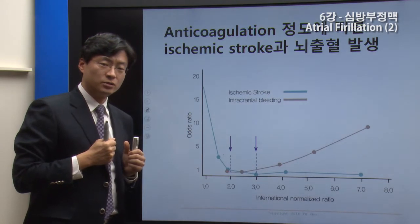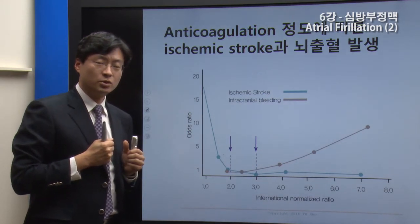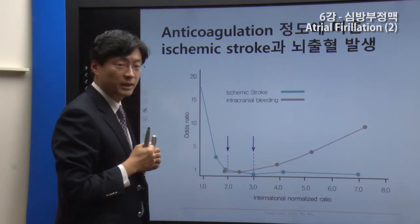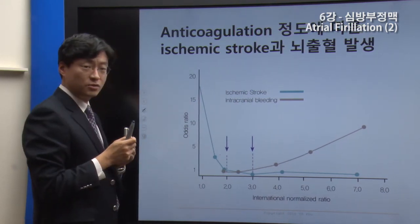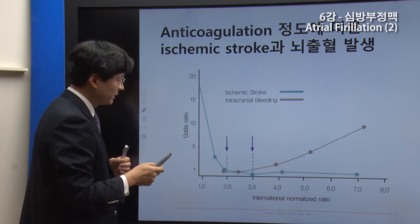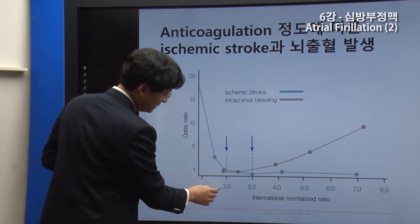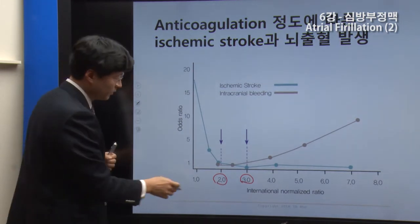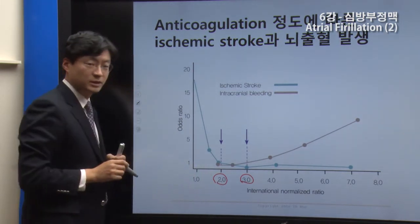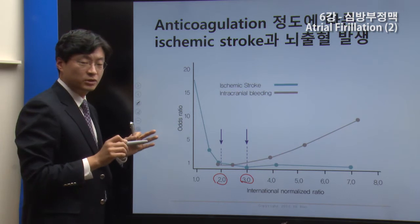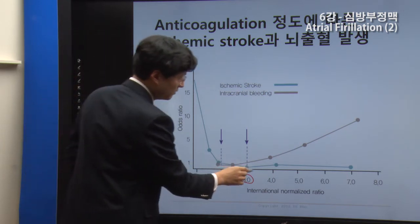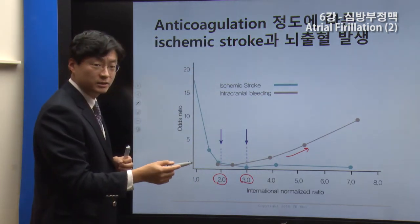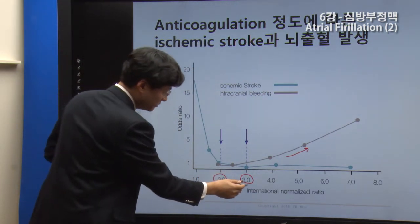Even though the effect is a lot, Warfarin is usually considered by the number of Prothrombin times, but that is not enough for stroke prevention. If you look at stroke prevention, you can see the number of Prothrombin times is not sufficient, and if you increase it, bleeding will increase. So when you look at Warfarin, the target INR level is 2 to 3.9.